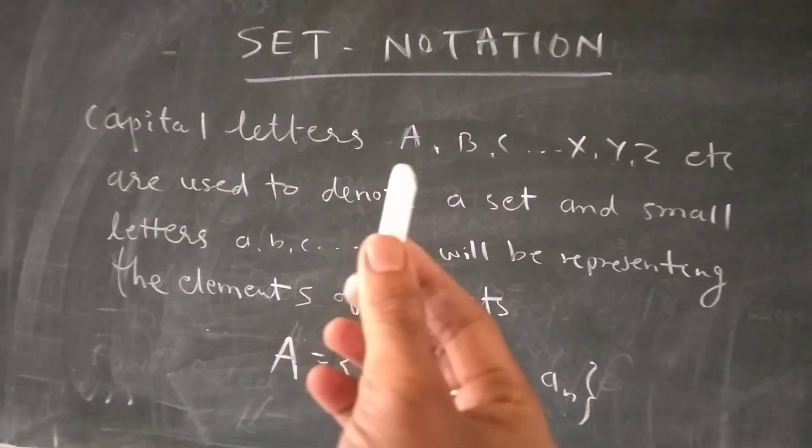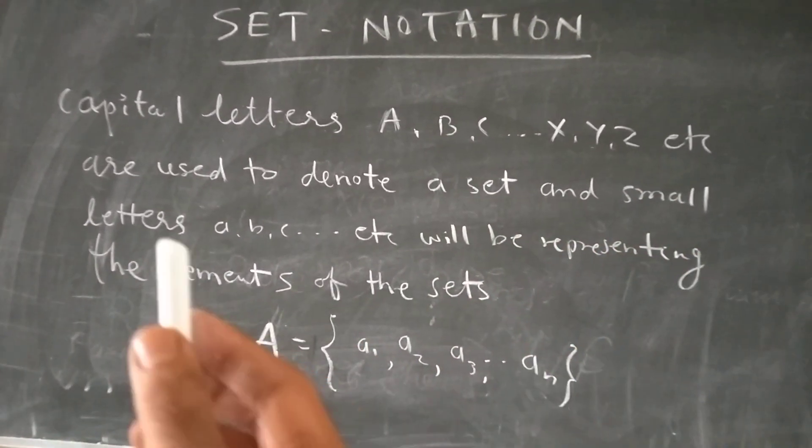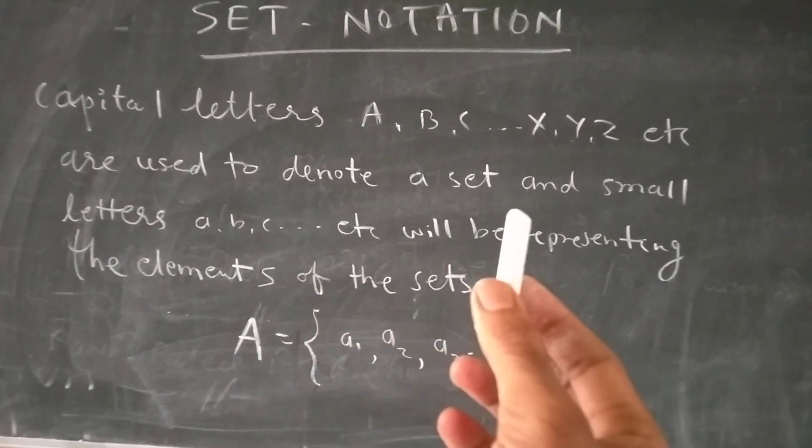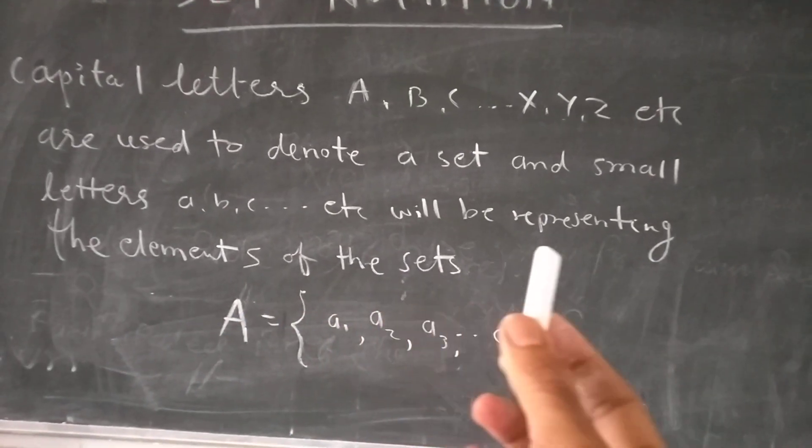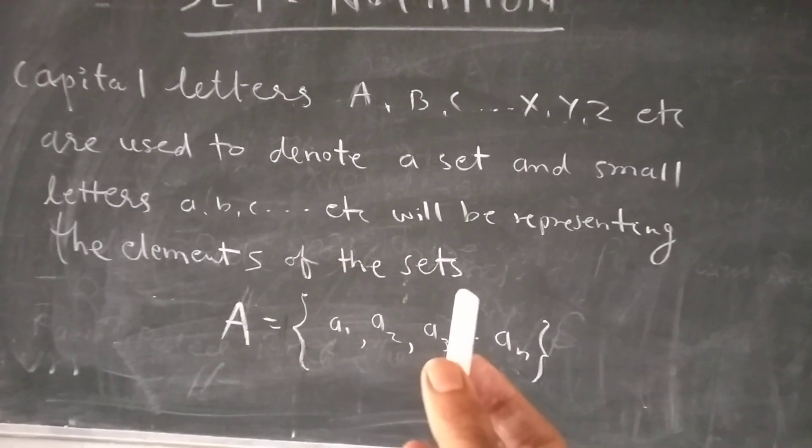Capital letters A, B, C, D, X, Y, Z etc. are used to denote a set and small letters a, b, c, d, etc. will be representing the elements of the set.